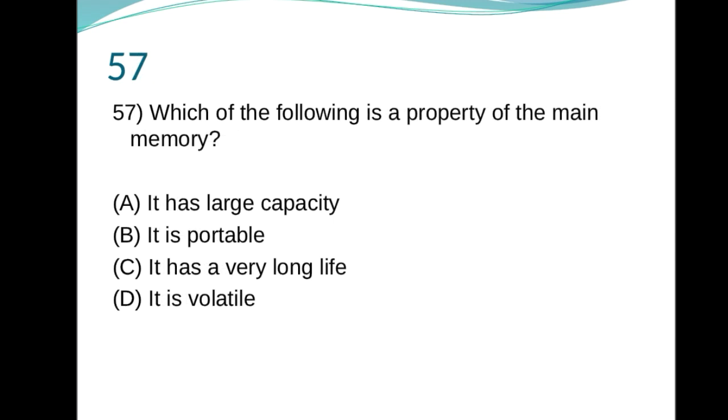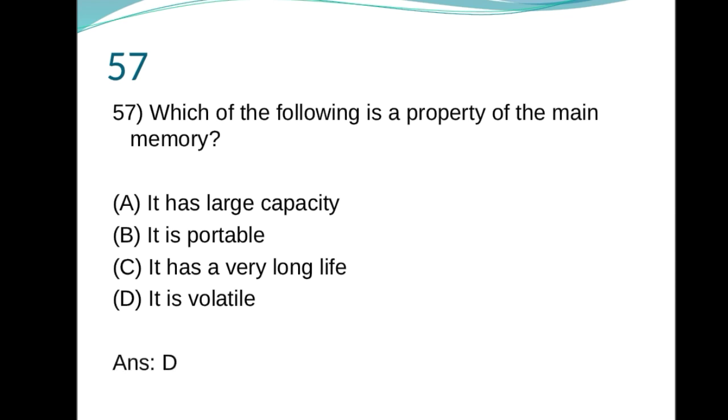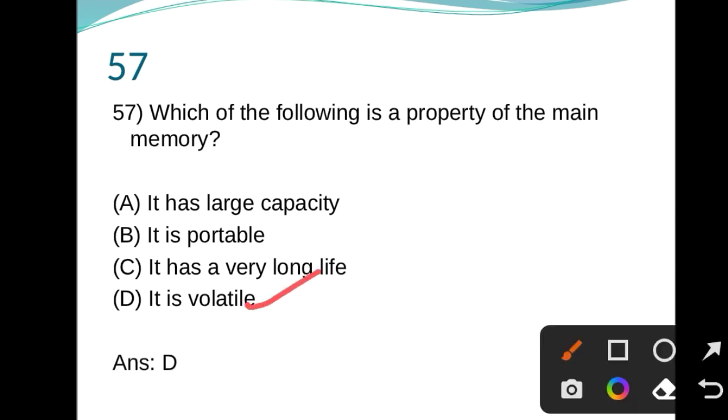57. Which of the following is a property of main memory? It has large capacity, it is portable, it has very long life, it is volatile. D is the right answer. It is volatile.